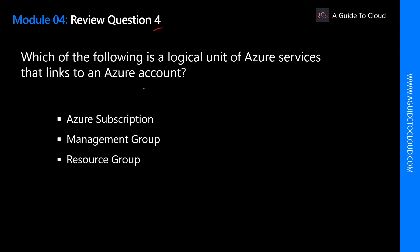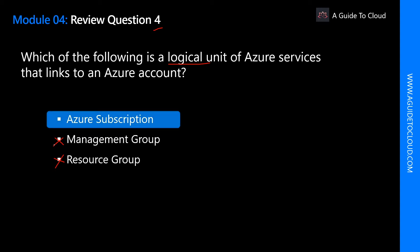Which of the following is a logical unit of Azure services that links to an Azure account? The keyword here is 'logical unit for Azure services that links to your Azure account.' Resource Group is a logical container for Azure resources, and Management Group facilitates hierarchical ordering. The correct answer is Azure Subscription — an Azure subscription is a logical unit of Azure services that links to an Azure account.